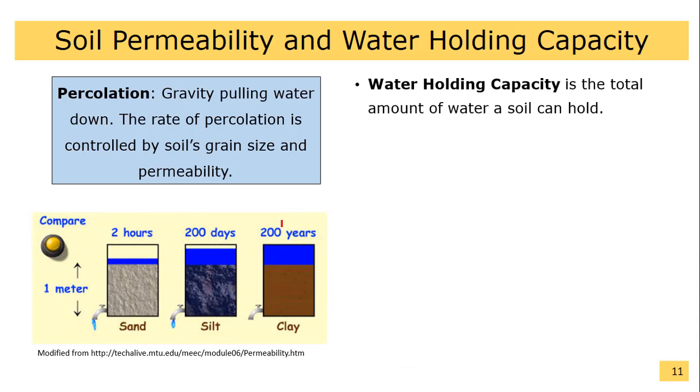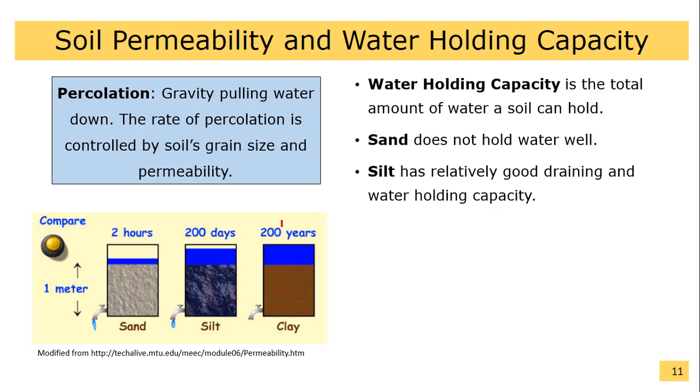Water holding capacity is the total amount of water a soil can hold. Sand does not hold water well. Silt has relatively good draining and water holding capacity. Clay has very low porosity and retains a high amount of water.